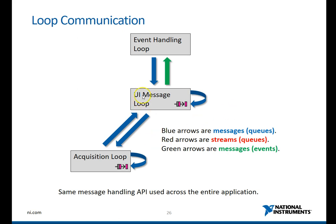In this scenario, you have an acquisition loop here to acquire data from, let's say, a sensor. As you can see, the QMessages are going back and forth between the UI message loop and the acquisition loop. While that is happening, the acquisition loop is actually reiterating itself.